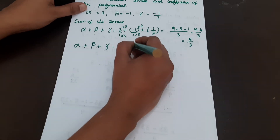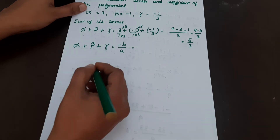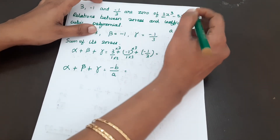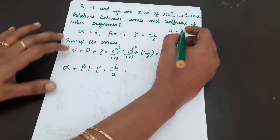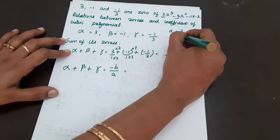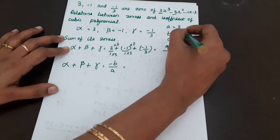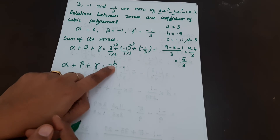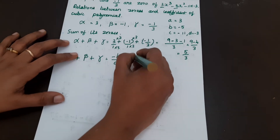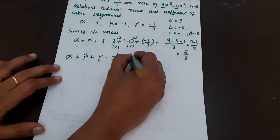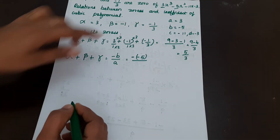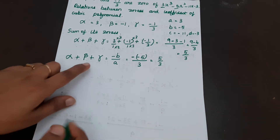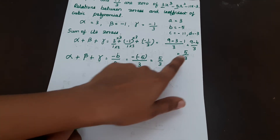So sum of zeros = 5/3, and -b/a = 5/3. These are equal, so alpha + beta + gamma = -b/a is verified. Now we move to the product of all three zeros.